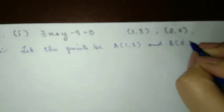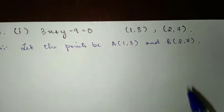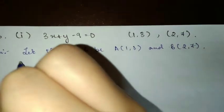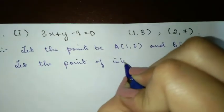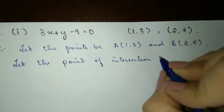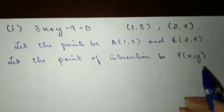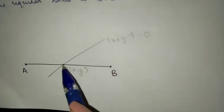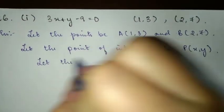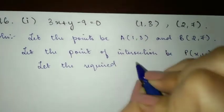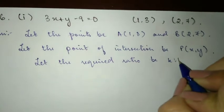Let the given points be A(1,3) and B(2,7). Let the point of intersection be P. Let the required ratio be k is to 1.